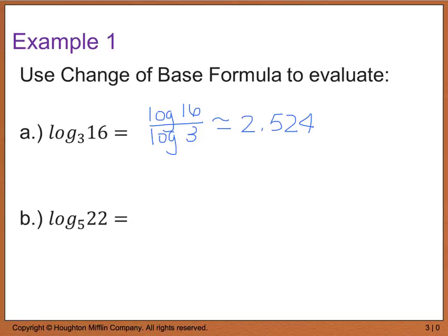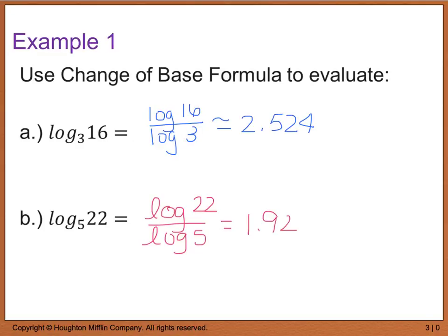Likewise, for part B, I have log base 5 of 22. This is going to be equal to log base 10 of 22 divided by log base 10 of 5. When I type this into my calculator, I get something about 1.92. Please confirm this on your calculator so that you can ensure you're getting the same thing.